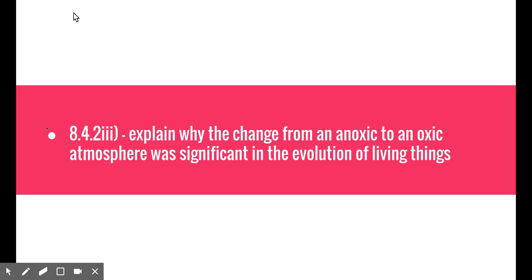Welcome to the next video in the evolution series. This video will be looking at life on earth dot point 8.4.23, which is explained by the change from an anoxic to an oxic atmosphere was significant in the evolution of living things. We're going to look at definitions of anoxic and oxic environments, and then how changing from anoxic to oxic helped organisms evolve into what they are today.